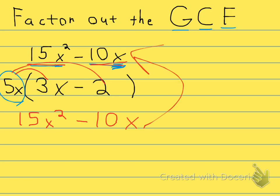So your answer is 5x on the outside and 3x minus 2 left over on the inside. Here's what your answer looks like.